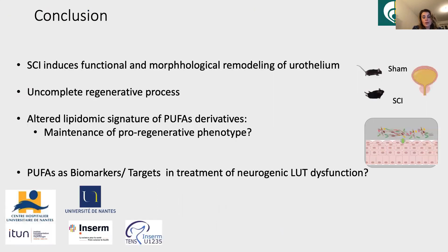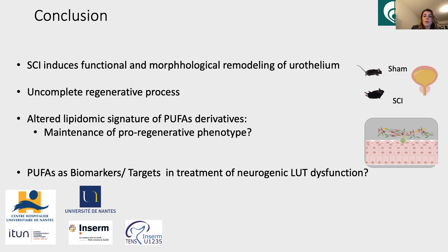In conclusion, four weeks after spinal cord injury, major functional and morphological remodeling of the urothelium occurred that are suggestive of ongoing and incomplete epithelial regenerative processes. These changes are associated with an altered lipidome signature of PUFA-derived mediators, suggesting their defective contribution to these changes and the maintenance of a pro-regenerative phenotype of the urothelium. Further studies are needed to demonstrate their direct role in these changes and their putative use as biomarkers and/or therapeutic targets in lower urinary tract dysfunction in spinal cord injury patients.